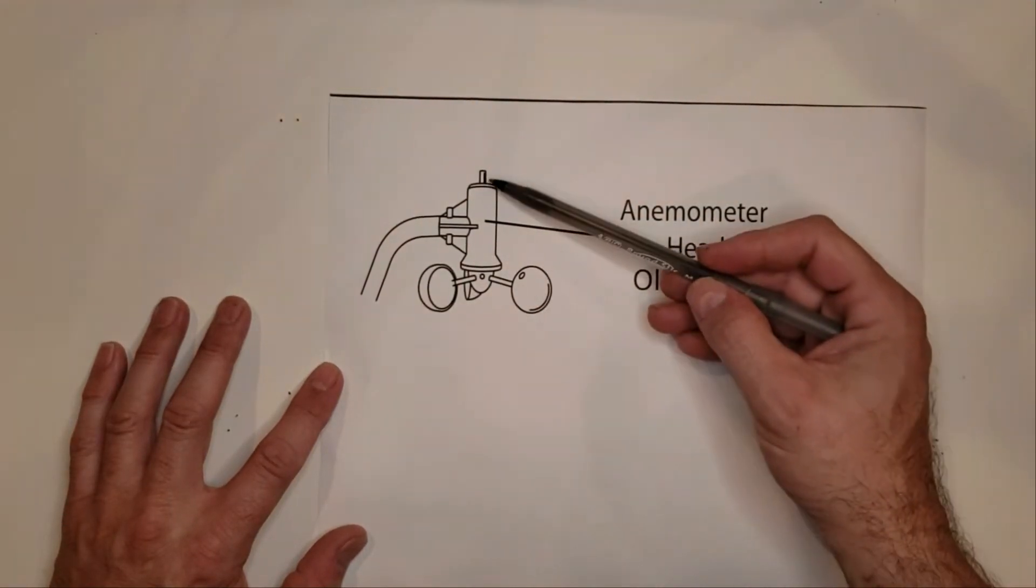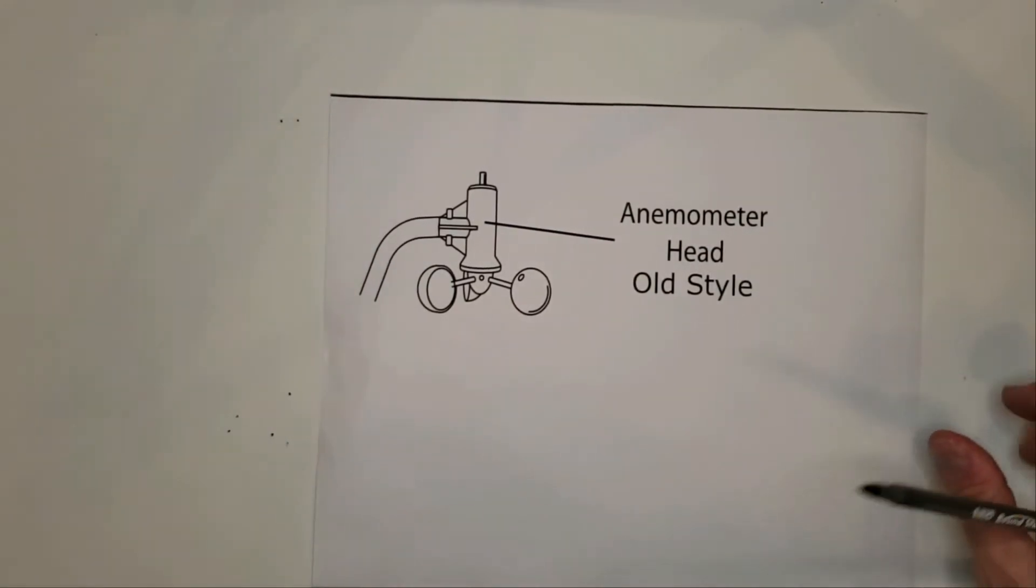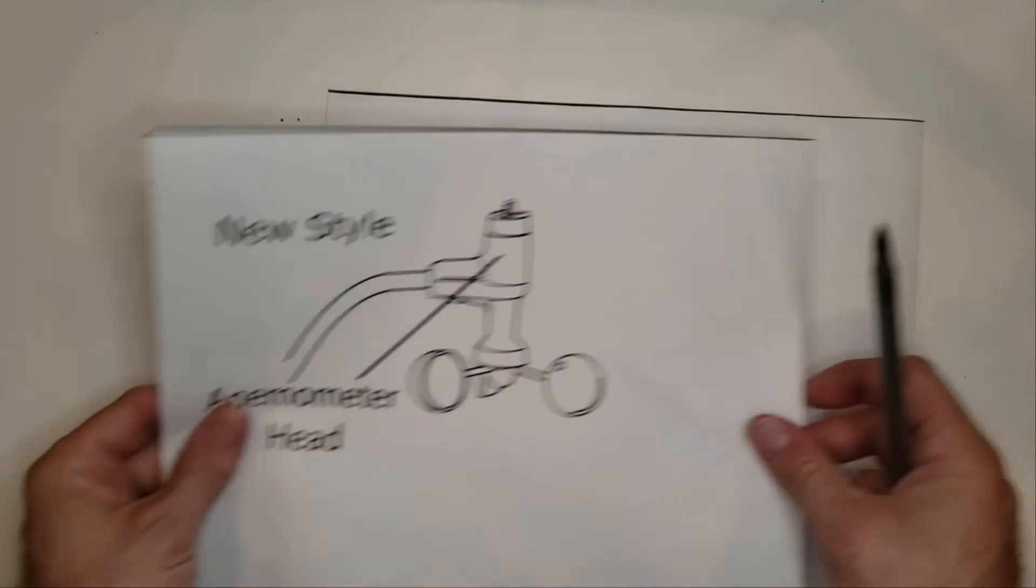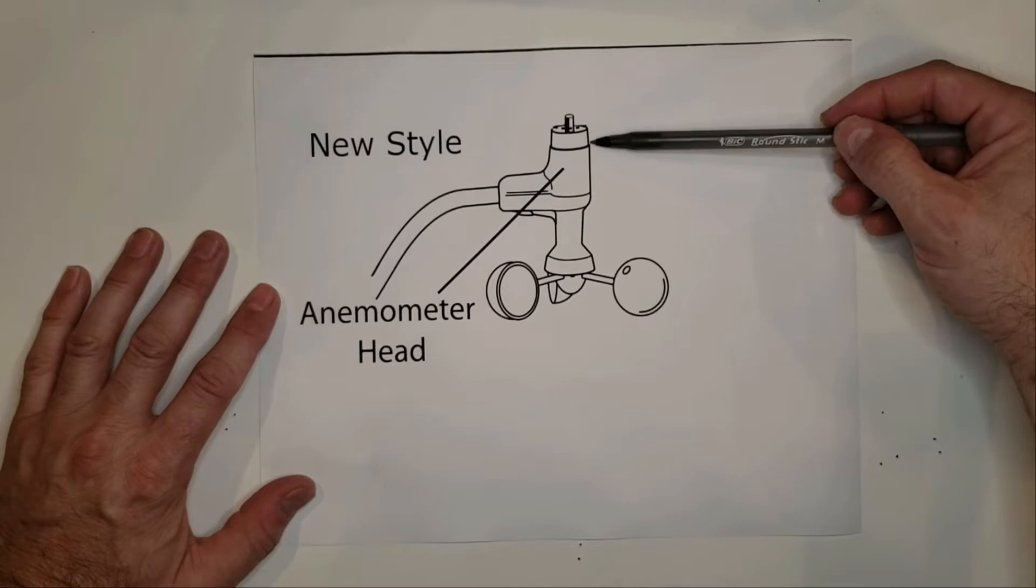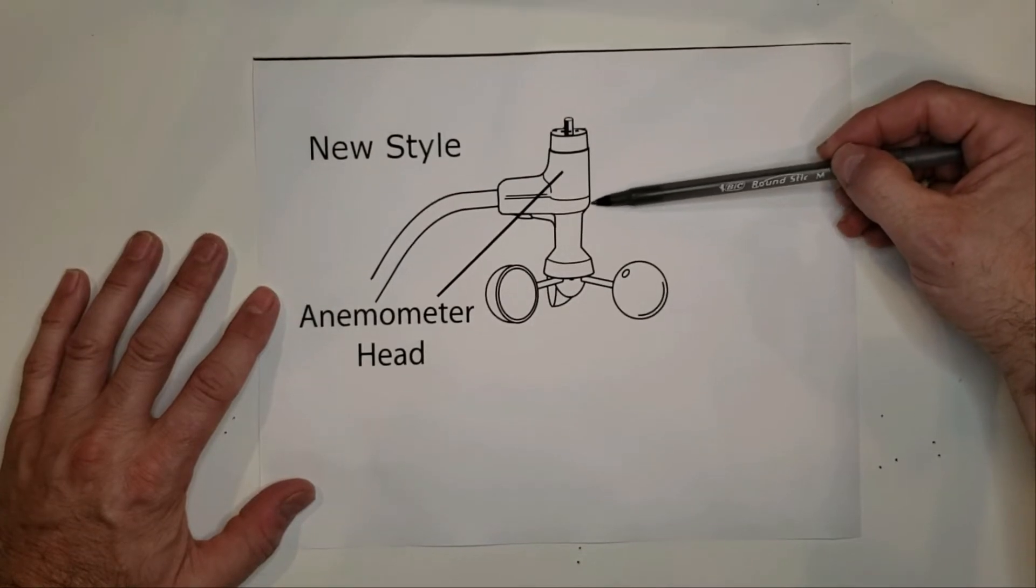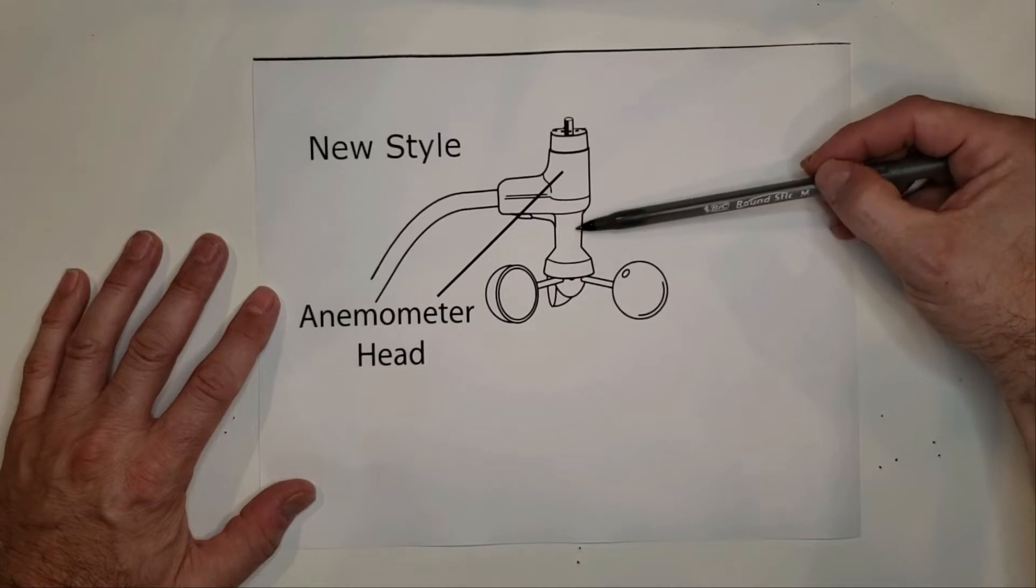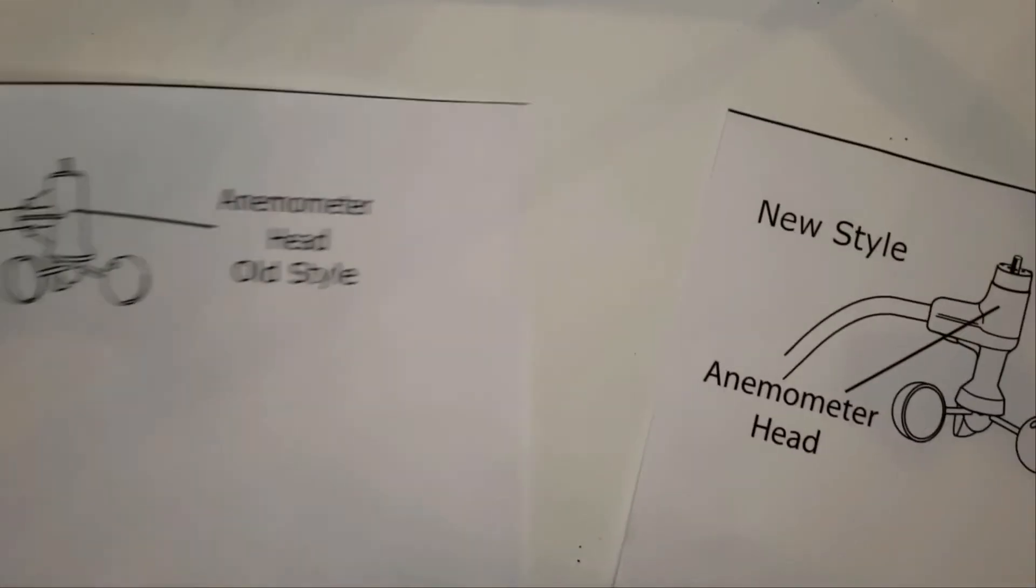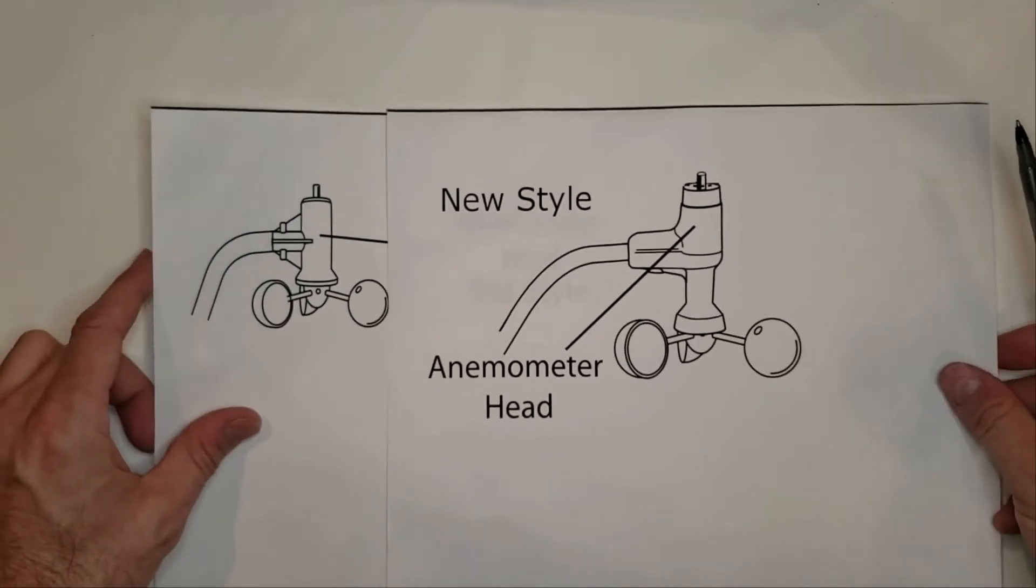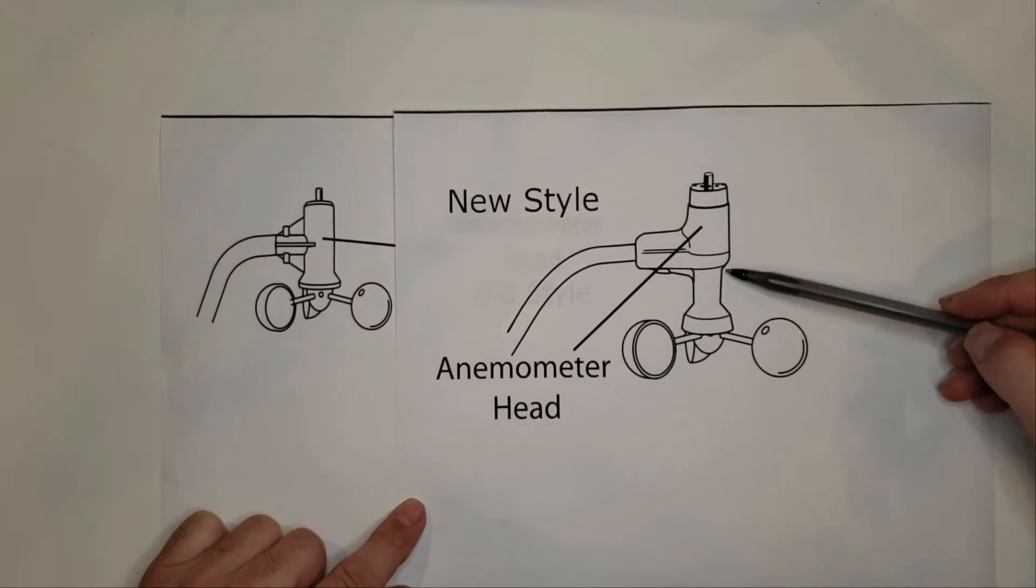This diagram is missing the wind vane just for reference. The new style starts with a flat side but then it flares in and then it flares back out. It's an hourglass shaped anemometer, so here they are side by side. Straight body, flared.